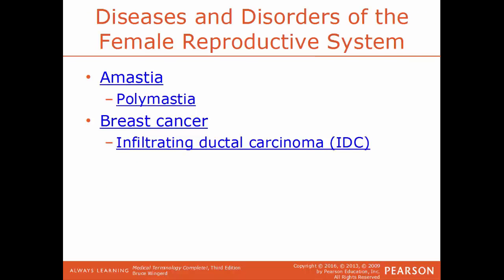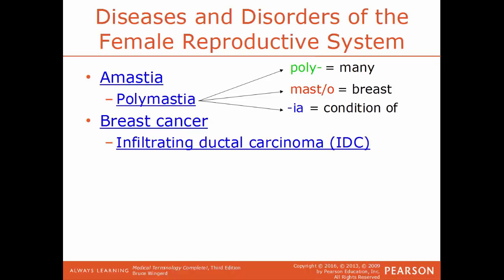Specific diseases and disorders of the female system: amastia is a condition where breast tissue, nipple, and areola are absent. Polymastia — poly means many, masto means breast, ea is a condition — so this is having more than two breasts present. Breast cancer is a general term for cancer of the breast. IDC, infiltrating ductal carcinoma, also known as invasive ductal carcinoma, is cancer that has begun in the duct and invaded the fatty tissue of the breast outside that duct — the most common type of breast cancer.